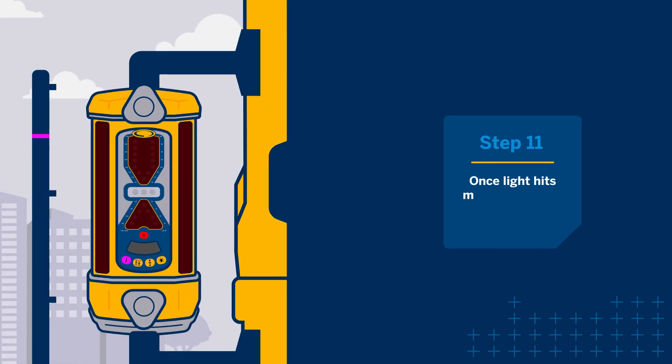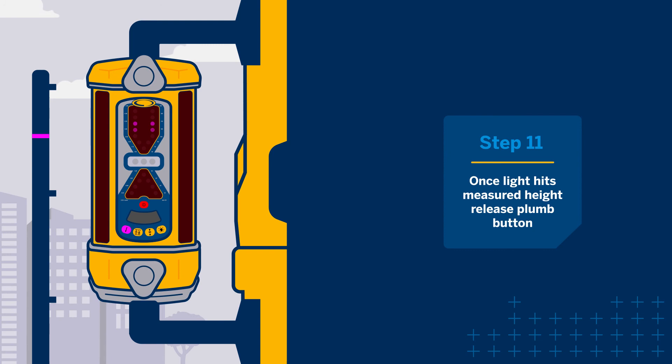Continue holding the plumb button to scroll up the setup length scale. Release the button when the lit LED is closest to the measured setup length. The LED flashes to confirm the setting.